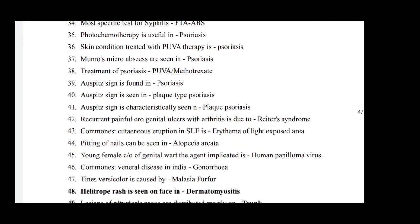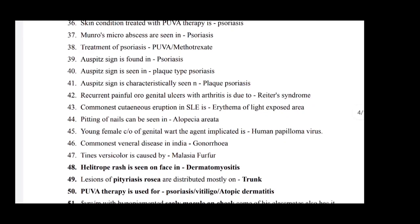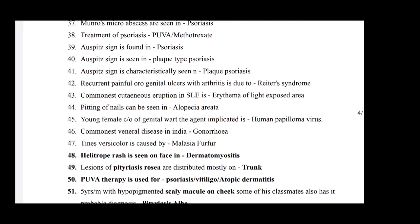Photochemotherapy is useful in psoriasis. Skin condition treated with PUVA therapy is psoriasis. Munro's microabscesses are seen in psoriasis. Treatment of psoriasis is PUVA therapy and methotrexate. Auspitz sign is found in psoriasis. Auspitz sign is seen in plaque type psoriasis.